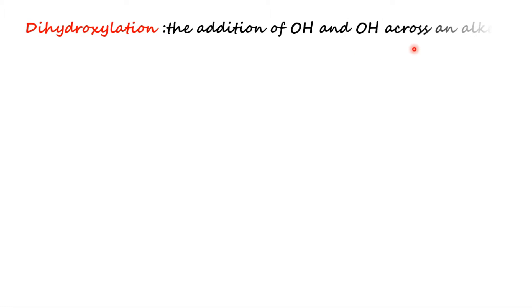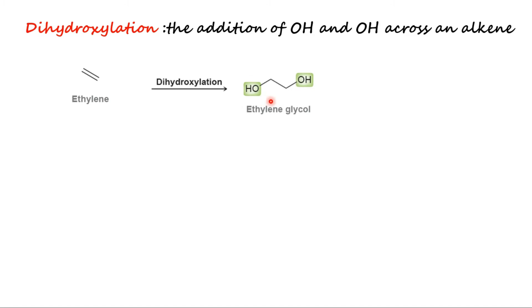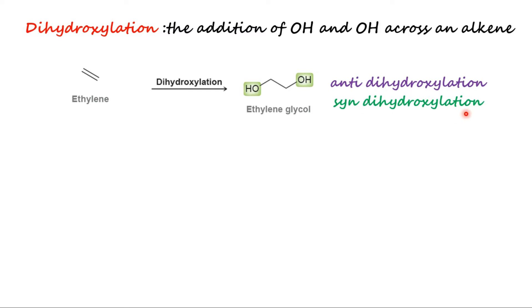Dihydroxylation reactions are characterized by the addition of OH and OH across an alkene. Consider the simplest alkene molecule, ethylene. Upon dihydroxylation, it gives ethylene glycol. There are a number of reagents well suited to carry out this transformation. Some reagents provide for an anti-dihydroxylation, while others provide for a syn-dihydroxylation. In this lecture, we will explore a two-step procedure for achieving anti-dihydroxylation.